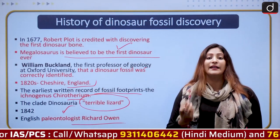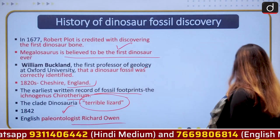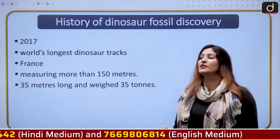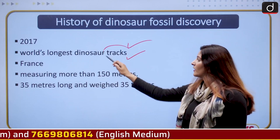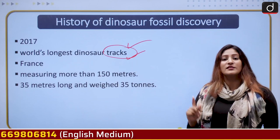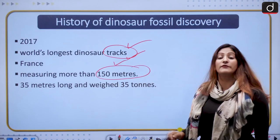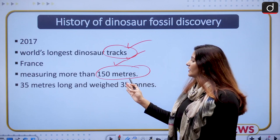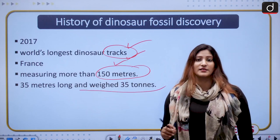In 2017, the world's longest dinosaur track was seen in France, measuring more than 150 meters. It showed us that the track maker was 35 meters long and weighed about 35 tons.